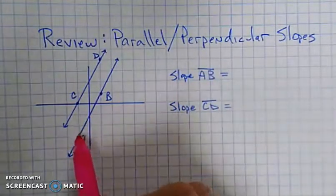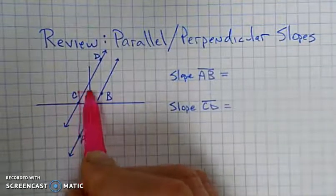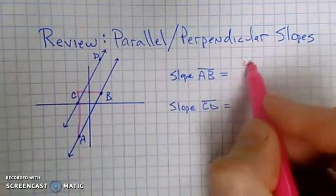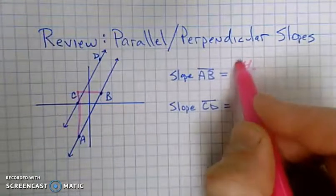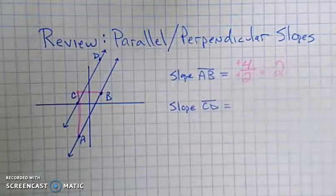And the slope of AB is going to go up, let's see, 1, 2, 3, 4. It's going up 4 and over 2. So that's a rise of 4 and a run of 2. So that's 4 over 2, which is just 2.